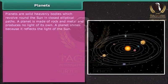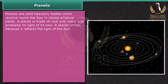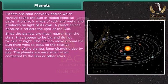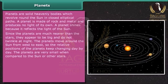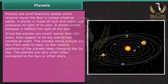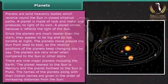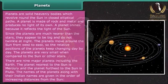Planets are solid heavenly bodies which revolve around the Sun in closed elliptical paths. A planet is made of rock and metal and produces no light of its own; it shines because it reflects the light of the Sun. Since the planets are much nearer than the stars, they appear big and do not twinkle at night. The planets move around the Sun from west to east, so their relative positions keep changing day by day. There are nine major planets, including the Earth. The names of the planets are listed in order of increasing distance from the Sun.